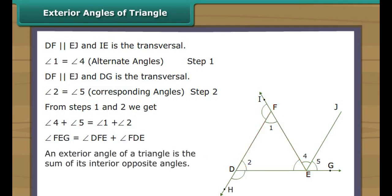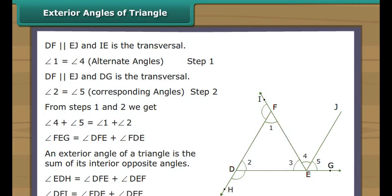Therefore, an exterior angle of a triangle is the sum of its interior opposite angles. Similarly, exterior angle EDH is equal to angle DFE plus angle DEF, and exterior angle DFI is equal to angle FDE plus angle DEF.